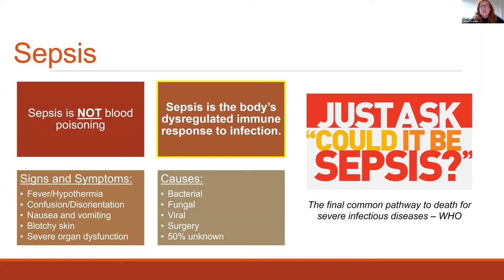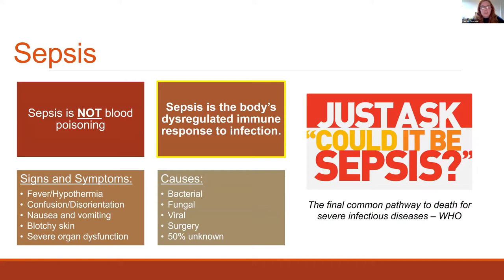First, I want to clarify something I get asked a lot: sepsis is not blood poisoning. People often use these terms interchangeably, but while blood poisoning can lead to sepsis, sepsis is actually defined as the body's dysregulated host immune response to infection. This means sepsis can arise from a variety of causes — a urinary tract infection, a fungal infection, viral infection, or even as a result of surgery. However, in as many as 50% of cases, we don't know the cause of the underlying infection.